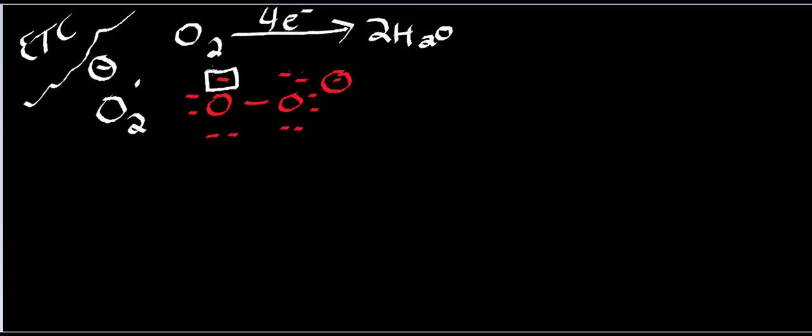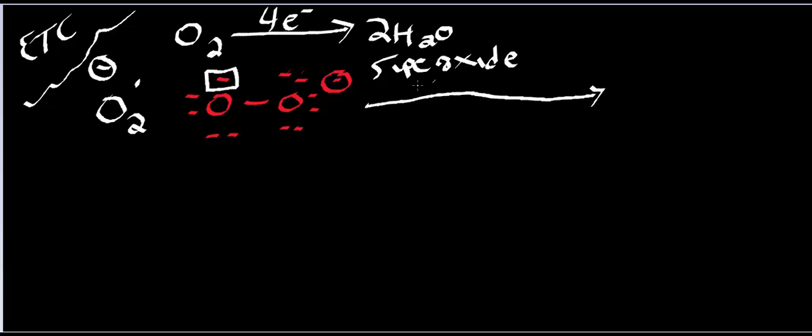This oxygen has a negative charge and a radical electron — and radical electrons, especially on oxygen, are very reactive. They can react with DNA. They can react with proteins, and whenever they do react, they destroy the function of whatever they react with. So your body has to have a way to get rid of this superoxide.